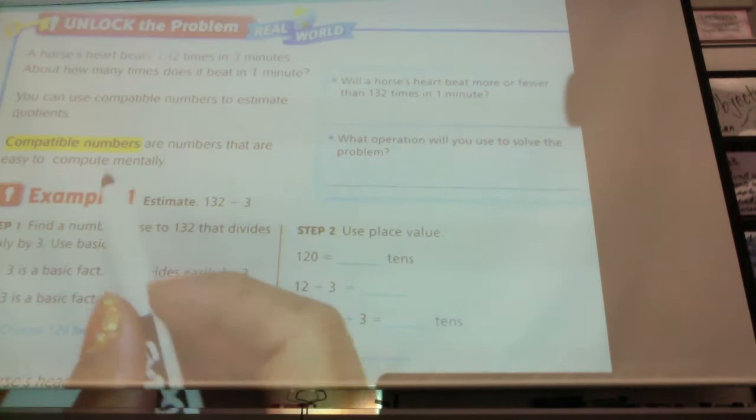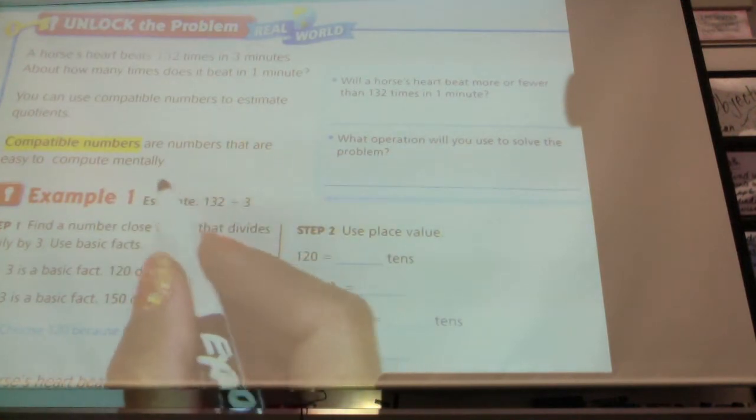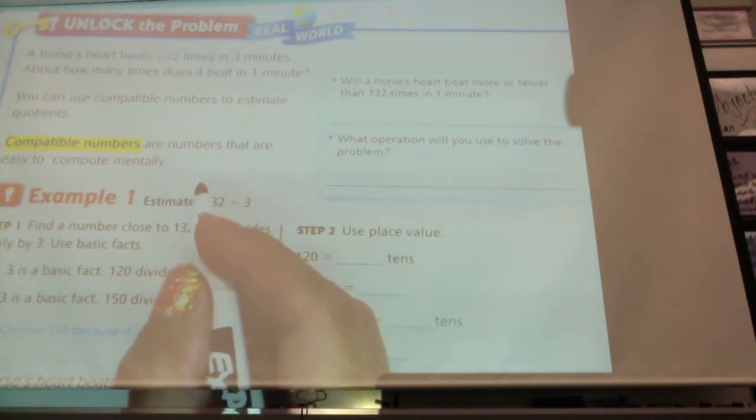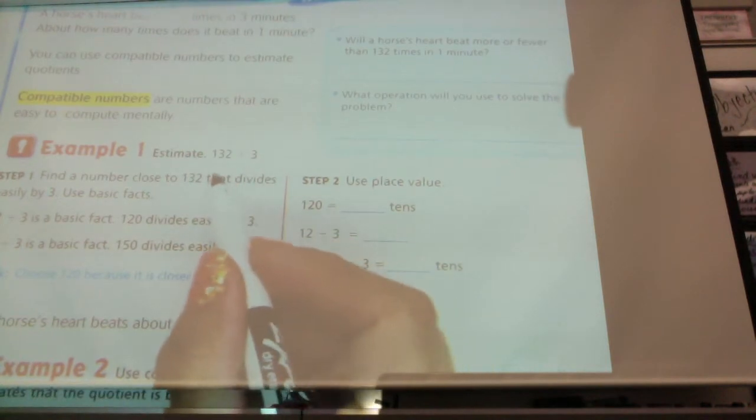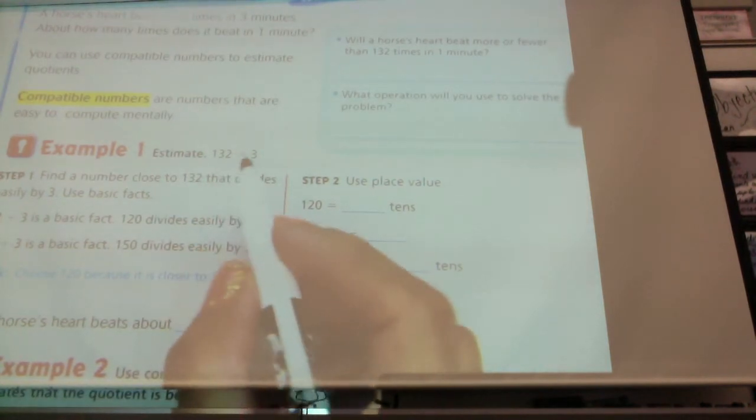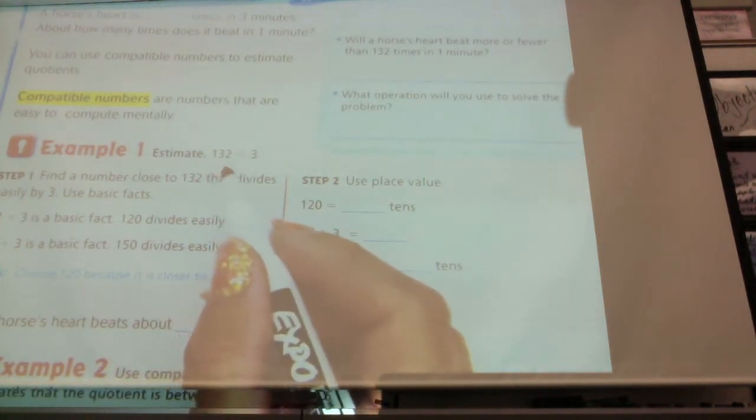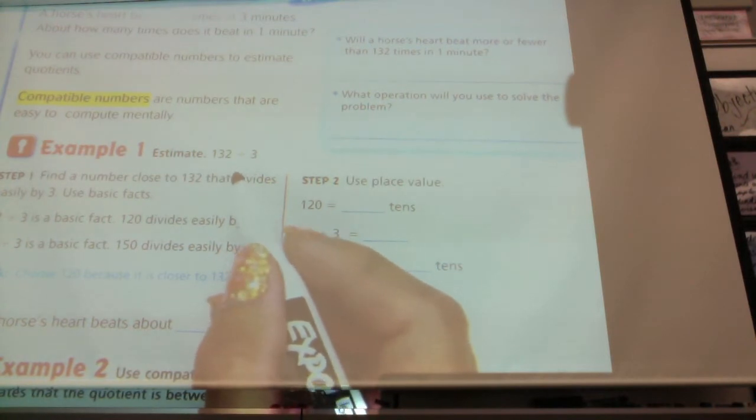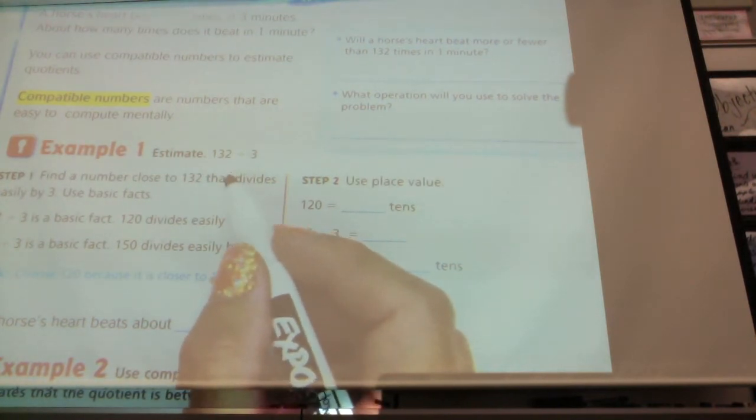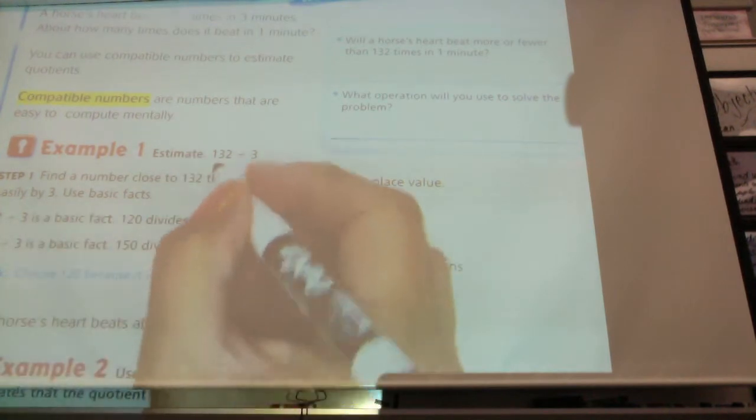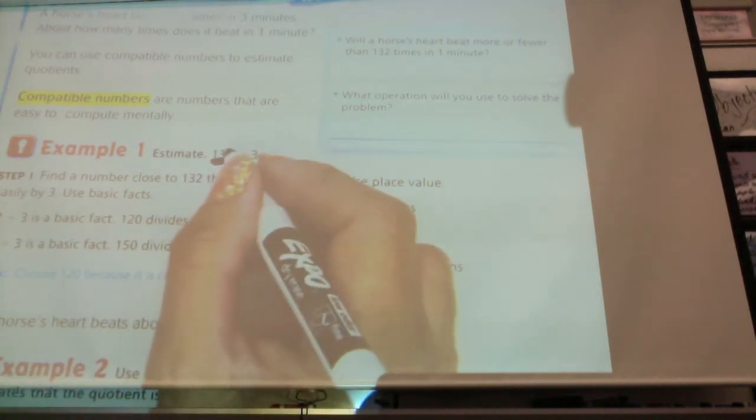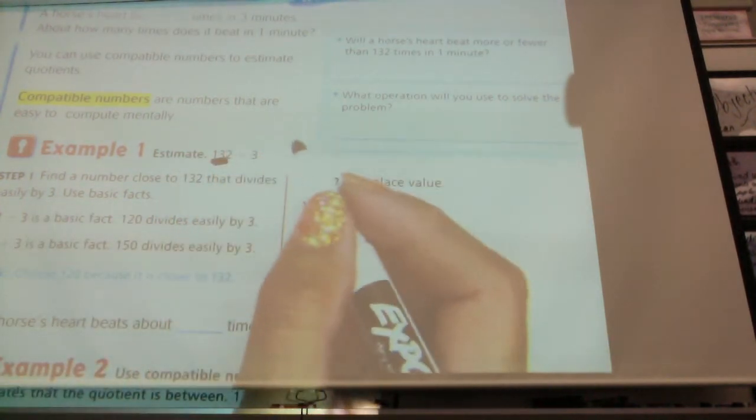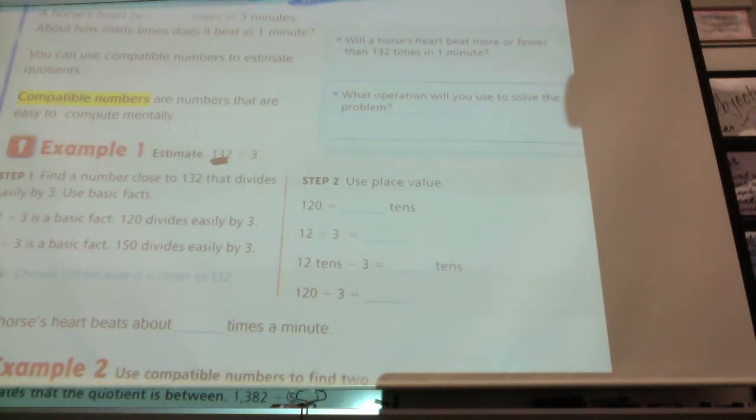Here we're going to give you a definition of compatible numbers: numbers that are easy to compute mentally. For this one, if we want to think of a number that is compatible with 132 divided by 3 and close to 132, we can think of the number 13. What's close to 13 that's divisible by 3? Think for a moment, I want everybody thinking. What number is close to 13 that's divisible by 3?